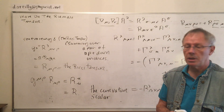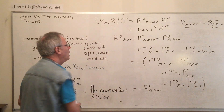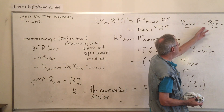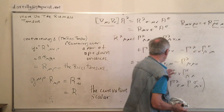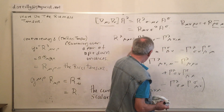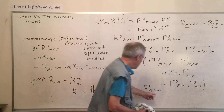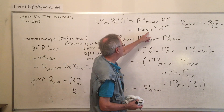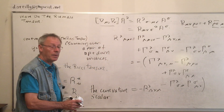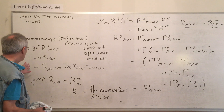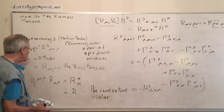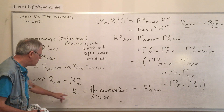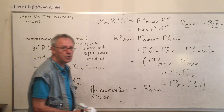So those are some preliminaries. We did the symmetry in the two first and back indices. We did the anti-symmetry in the two later indices — or equivalently the two first indices — of the Riemann tensor. We did contracting a tensor, defined the Ricci tensor, and we contracted the Ricci tensor to define the curvature scalar.